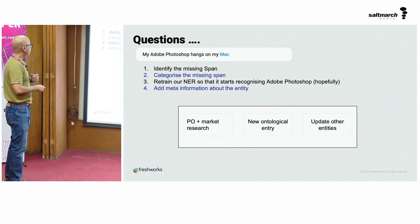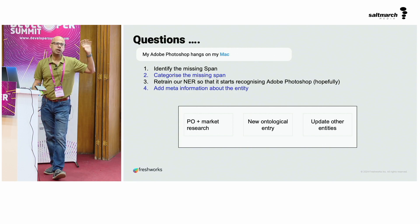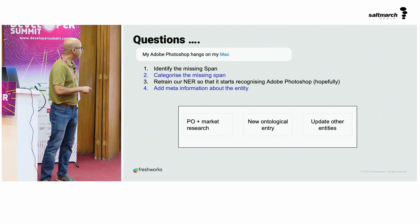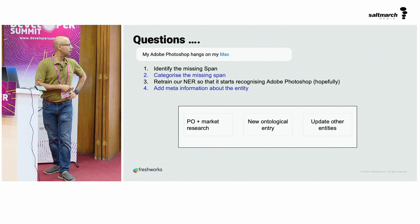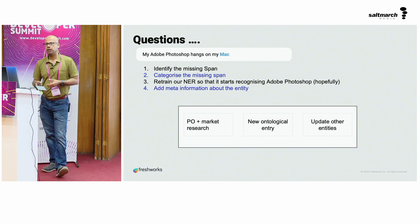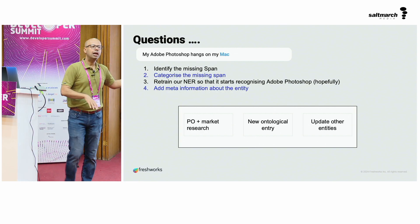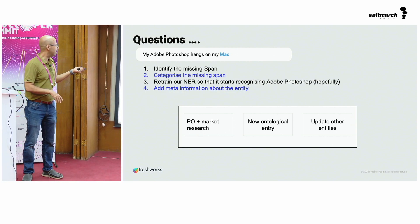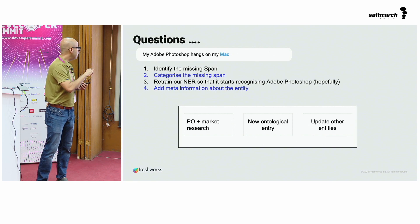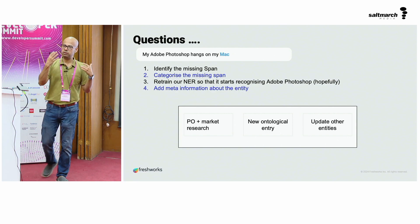Once we identify the missing span — let's say we know Photoshop was missed and our classifier isn't recognizing it — we categorize that span. The annotation team, with the help of product owners, does market research to identify whether this is a legitimate tool and where it sits in our hierarchy. Typically Adobe Photoshop we recognize easily; it's more esoteric tools that we fail on. Once categorized, we retrain our NER model so that Adobe Photoshop is now recognized going forward.